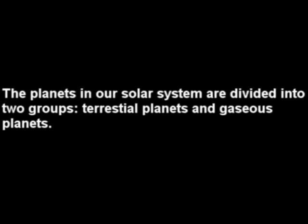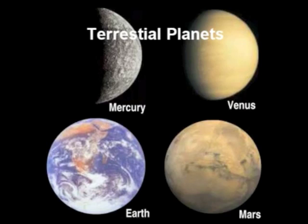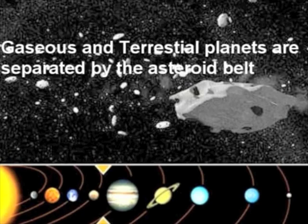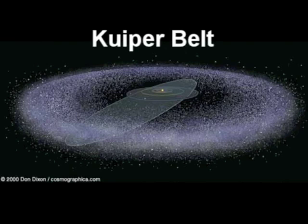The eight planets of our solar system are divided into two groups: terrestrial and gaseous. Mercury, Venus, Earth, and Mars are terrestrial planets. Jupiter, Saturn, Neptune, and Uranus are gaseous planets. These two groups are separated by the Asteroid Belt. Around these planets are the Kuiper Belt, which contains minor planets such as Pluto, and the Oort Cloud, respectively.